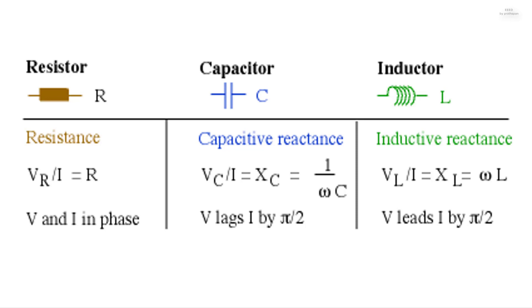Resistance is the special case of impedance when phi equals zero. Reactance is the special case when phi equals plus or minus 90 degrees. The table below summarizes the impedance of the different components.